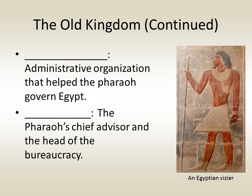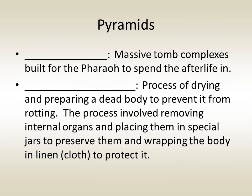To aid him in governing Egypt, the pharaoh used a bureaucracy — an administrative organization that helped him govern — and was also aided by a vizier, the pharaoh's chief advisor and head of the bureaucracy. Ancient Egyptians placed a great deal of importance on the afterlife. They built massive pyramids, or tomb complexes, for the pharaoh to spend the afterlife in. A dead pharaoh's body was preserved through mummification, which dried the body out and removed all the vital organs, placing them in special jars.